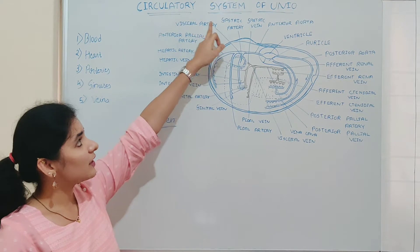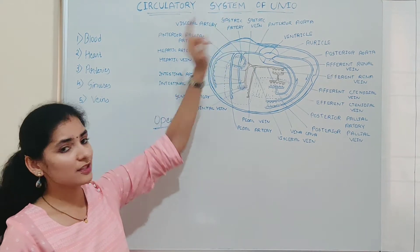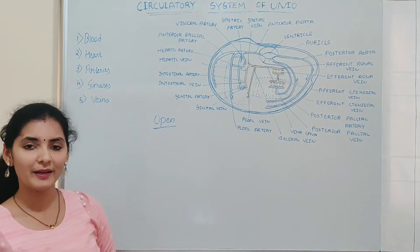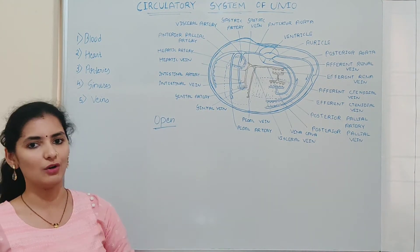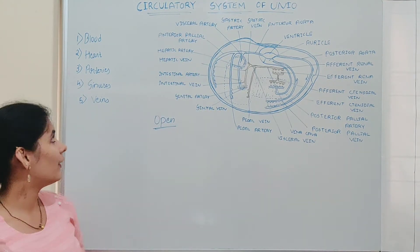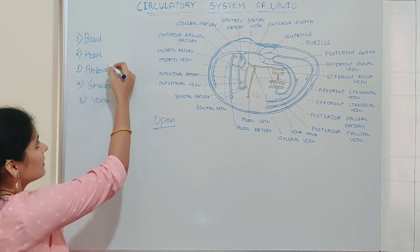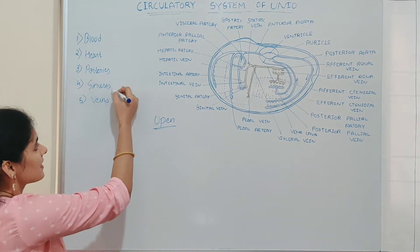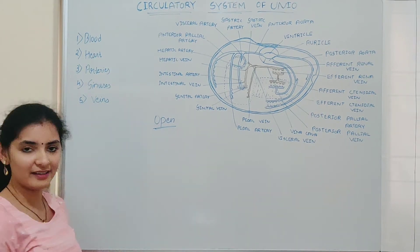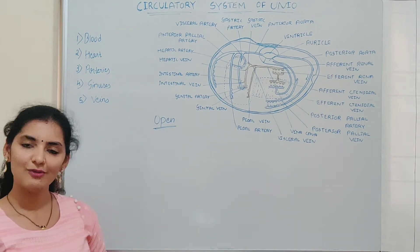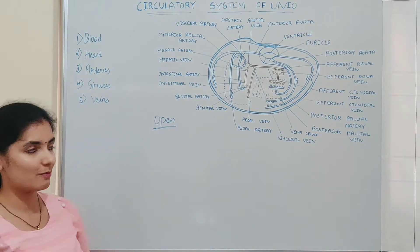The blood vascular system in the case of Unio mainly consists of five parts: blood, heart, artery, sinuses, and veins. We will discuss each one by one.